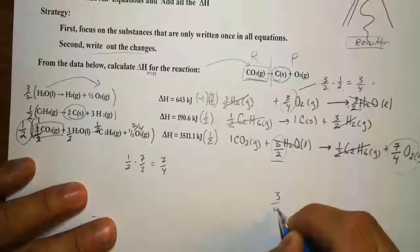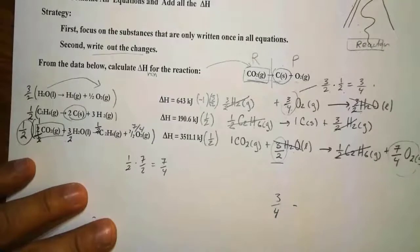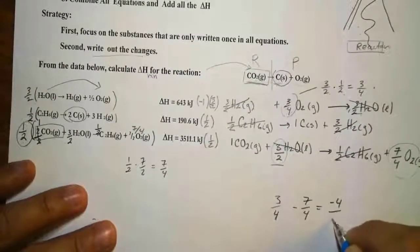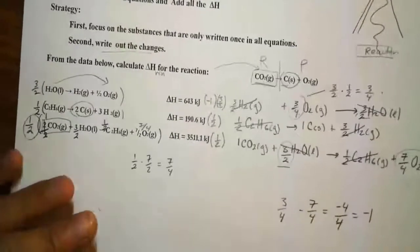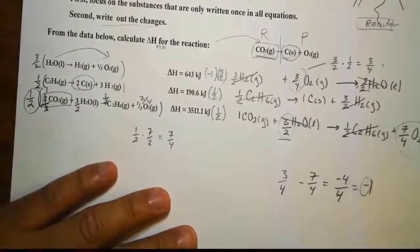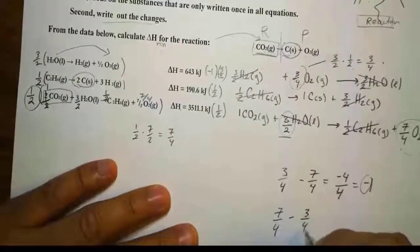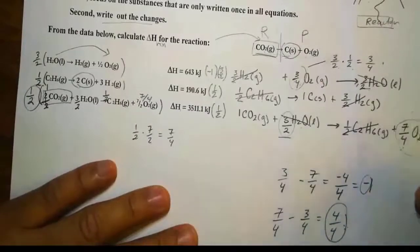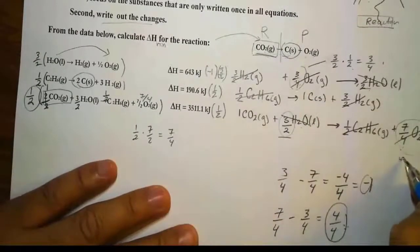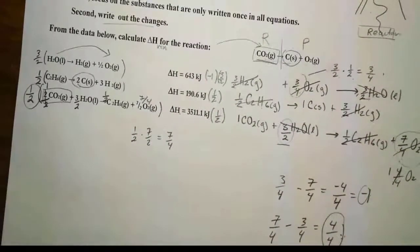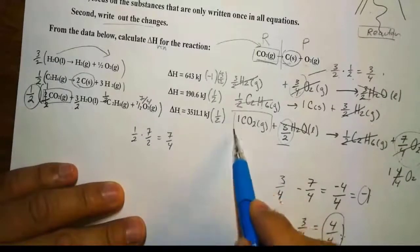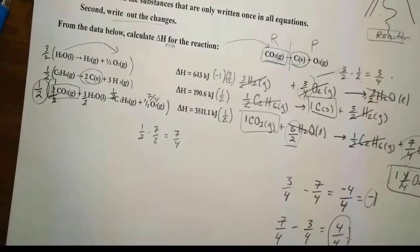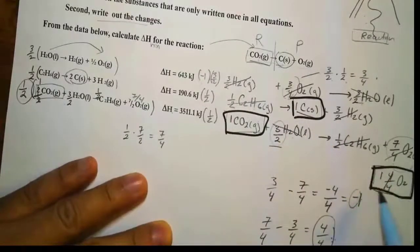The only thing left is oxygen. We have 3/4 O₂ on one side and 7/4 O₂ on the other. Taking 7/4 − 3/4 = 4/4 = 1 O₂. The leftover is on the product side because that's where it has more. So everything cancels, giving us one CO₂ → one carbon (solid) + one O₂ (gas), which matches our overall reaction.